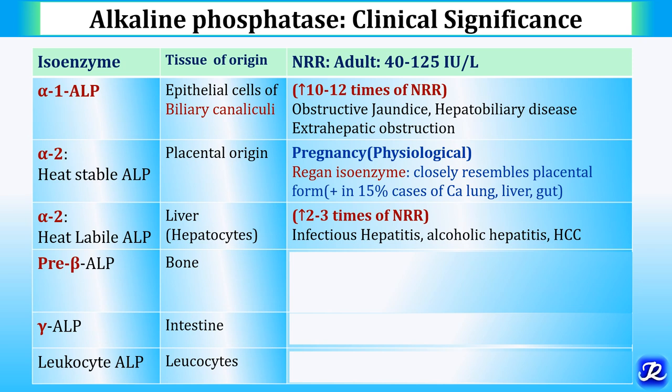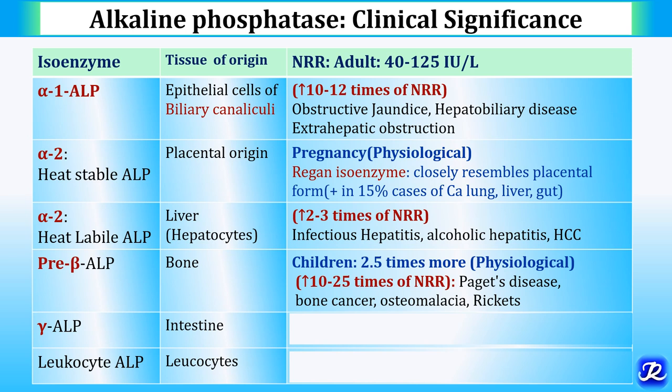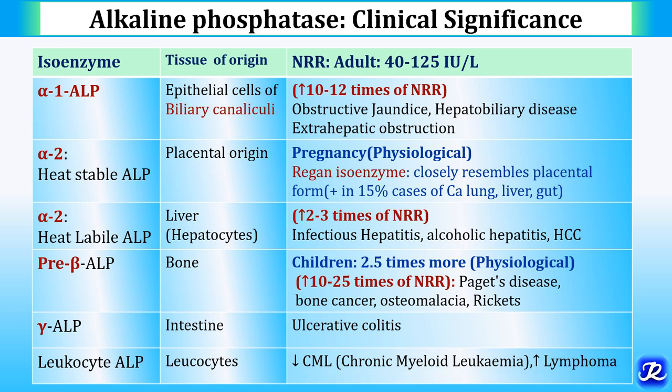Normal reference range in adults is 40–125 international units per liter. Pre-beta alkaline phosphatase, present in bone, is physiologically increased 2.5 times in children due to increased osteoblastic activity, and can be up to 25 times the normal reference range in conditions like Paget's disease of bone, bone cancer, osteomalacia, and rickets. Gamma alkaline phosphatase is increased in intestinal disorders like ulcerative colitis. Leukocyte-associated alkaline phosphatase is increased in lymphoma and decreased in chronic myeloid leukemia.